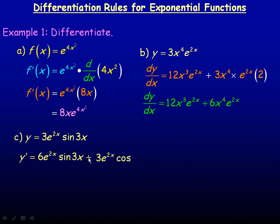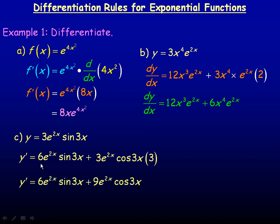Then we go plus the first function, 3e to the 2x, times the derivative of sine 3x. The derivative of sine x is cos x, so the derivative of sine 3x is cos 3x, and we multiply that by the derivative of 3x, which is 3. I would simplify the last part by multiplying the 3 by 3e to the 2x, giving 9e to the 2x cos 3x.